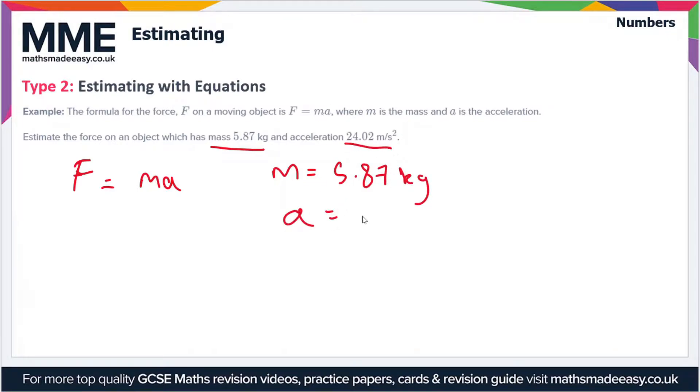What we're going to need to do is approximate both of these values. I'm going to use one significant figure here so we're going to have 6 kilograms and 20 meters per second squared.